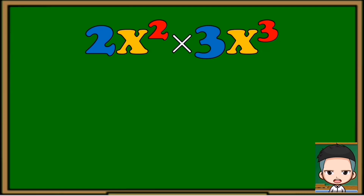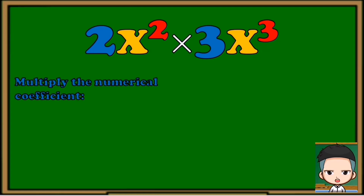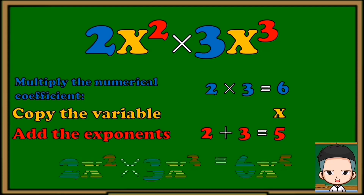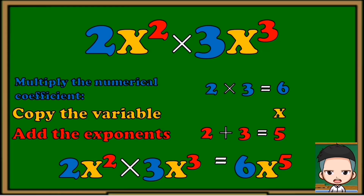Now I will teach you how to multiply polynomials with the same variable. First, you need to multiply their numerical coefficients. After that, just copy the variable. Then add their exponents. That's it — now all you have to do is arrange your answer: numerical coefficient first, then the variable, then the exponent.